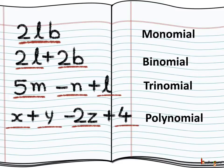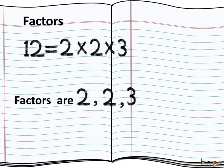Lastly, the expression x plus y minus 2z plus 4 consists of many terms and is called a multinomial or polynomial. So now we know: monomial consists of one term, binomial consists of two terms, trinomial consists of three terms, and polynomial consists of many terms.